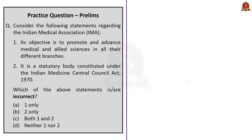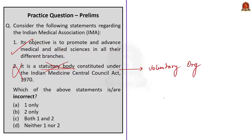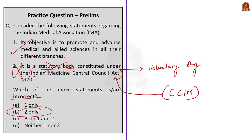The next question is based on the Indian Medical Association. First statement: its objective is to promote and advance medical and allied sciences in all their different branches — this statement is correct. Second statement: it is a statutory body constituted under the Indian Medicine Central Council Act 1970 — this statement is incorrect because IMA is not a statutory body but a voluntary organization. Note that the Central Council of Indian Medicine, which has been constituted under this 1970 act, is a statutory body recently in the news. Since the question asks for incorrect statements, the correct answer is option B — two only.